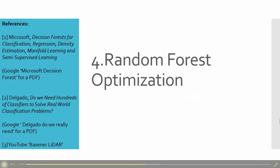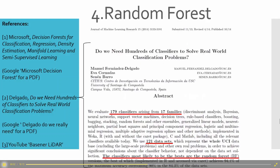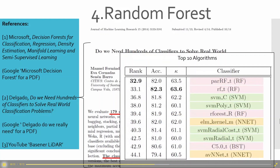For random forest optimization, there's an excellent Microsoft paper on random forest. Another notable paper asks: do we need hundreds of classifiers to solve real world classification problems? They took 179 classification algorithms across Python, R, MATLAB, and 17 different families, running them against 121 different datasets. The result was that random forest classifiers are most likely to be the best on average. Their top 10 also included support vector machines and neural nets. Random forest is really at the top of the list for what should be recommended for someone who's not an expert — though neural nets can be extremely accurate for specific tasks if people have a lot of experience with them.